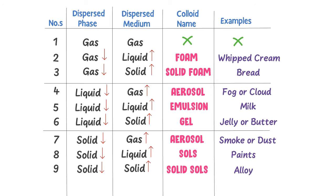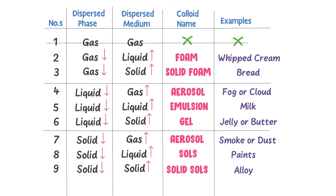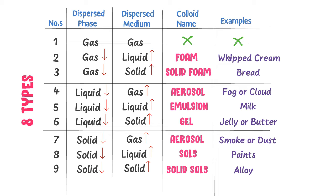Remember that we do not have a colloid for a gas and gas mixture, so we therefore have eight types of colloids or colloidal solutions. To learn more about solution, suspension, and colloids, watch our next video — the link is given in the description. This was all about colloids, types of colloids, and examples of colloids.